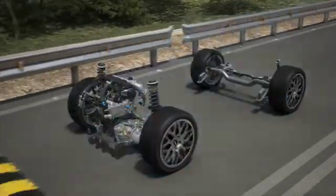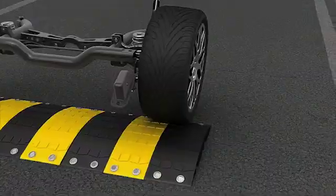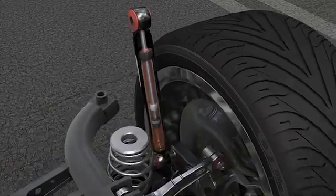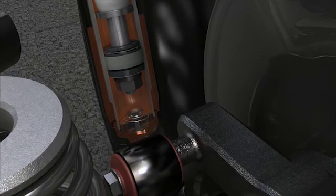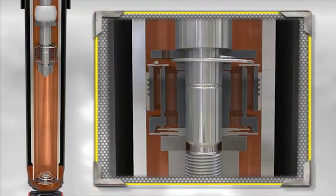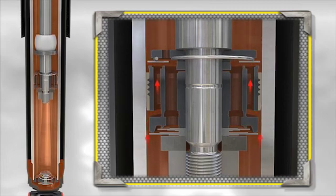When the shock absorber compresses due to uneven ground, the rod enters the working chamber, increasing the pressure of the oil contained within. During this compression phase, the compression valve controls the resistance of the damper movement, while oil flows almost freely from the bottom of the working chamber to the top through the piston valve.